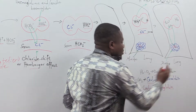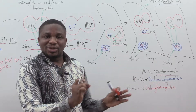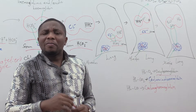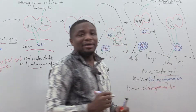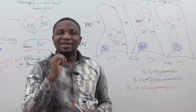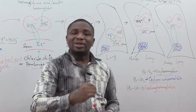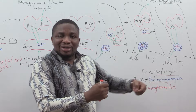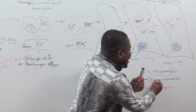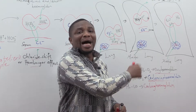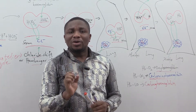When oxygen binds to hemoglobin, we call it oxyhemoglobin, because oxygen has a specific binding site on hemoglobin. When carbon dioxide binds to hemoglobin, it binds to the amino terminal of hemoglobin, so we call it carbaminohemoglobin — 'carb' for carbon dioxide, 'amino' for the amino terminal of hemoglobin.